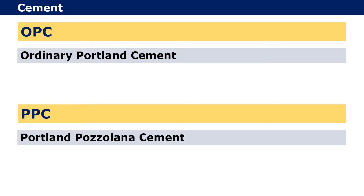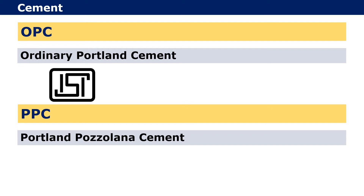Generally, the ISI mark on the Ordinary Portland Cement bag is black in color, whereas the ISI mark on the Portland Pozzolana Cement bag is red in color, but this is not a compulsion.